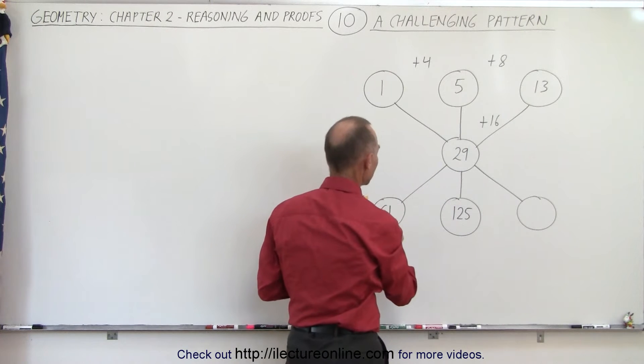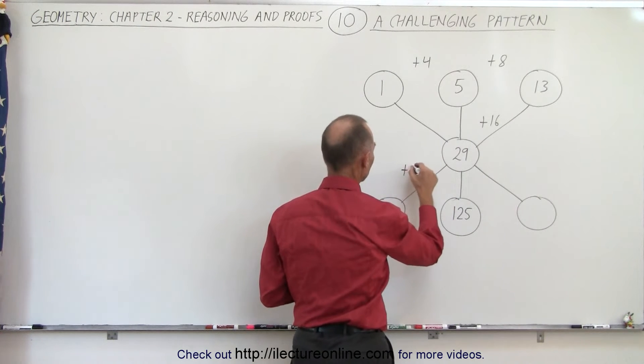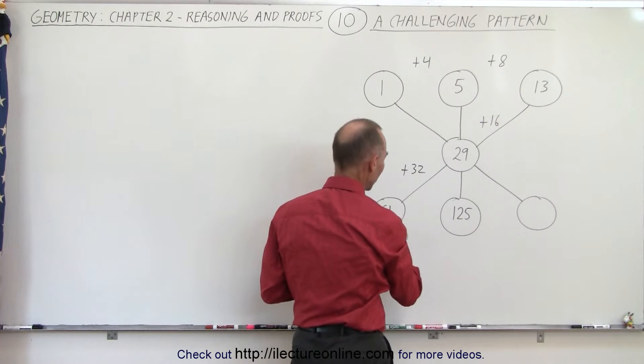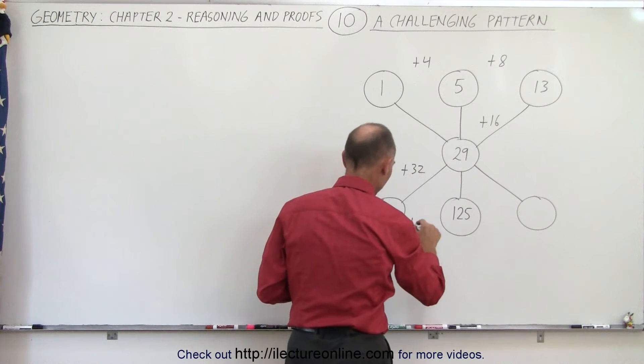From 29 to 61, that would be plus 32. From 61 to 125, that's plus 64.